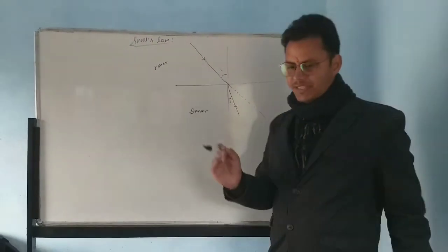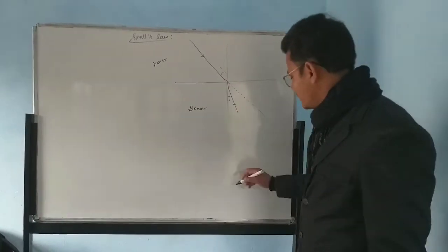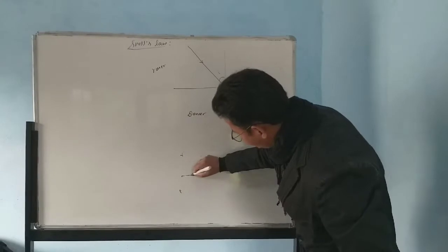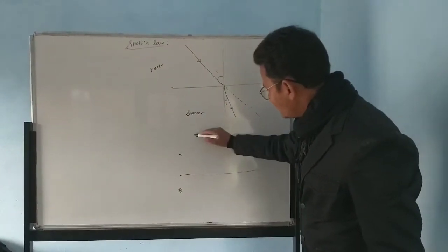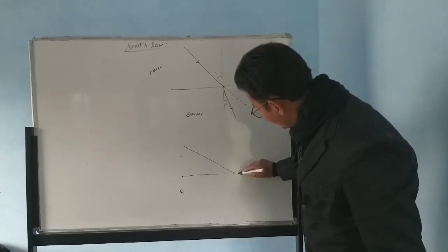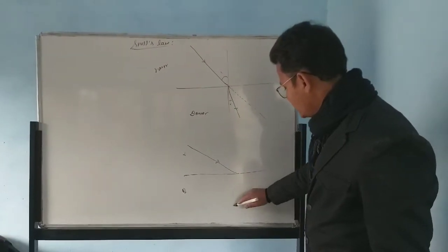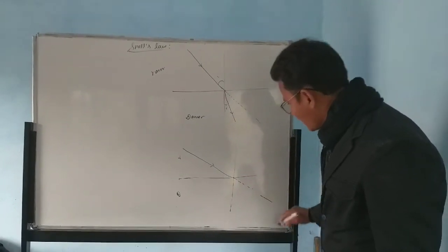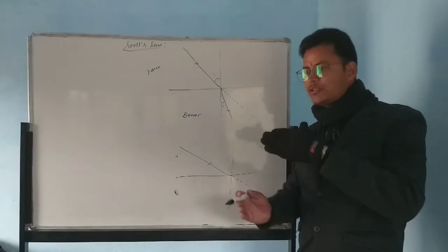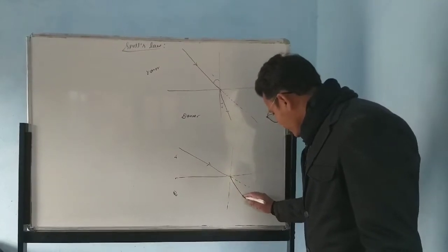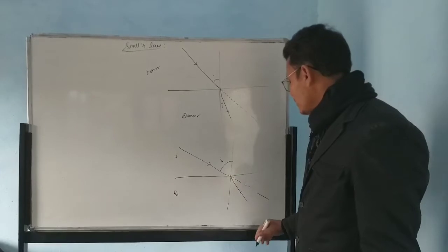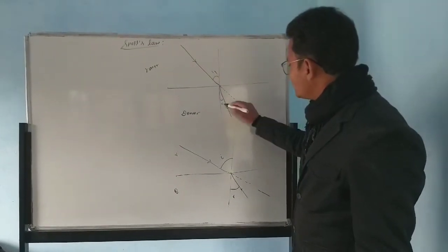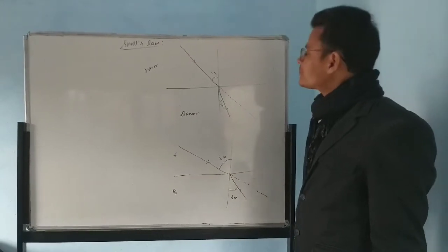Now let me change the angle of incidence — I am enlarging it. This is again the rarer medium and this is the denser medium. This is the ray of incidence; it is incident in this way. At this point I am drawing a normal. The original path of the light goes straight, but again going from rarer to denser medium, it bends towards the normal. Now I have enlarged the angle of incidence, so in the same way the angle of refraction has also been enlarged. Let's say the first angle of incidence is i1, so the angle of refraction is r1. This second one is i2, so this will be r2.